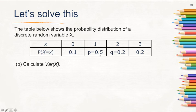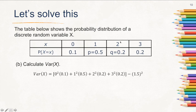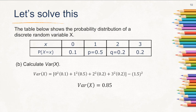Now calculate the variance of x. We already have E(x) = 1.5, so [E(x)]² = 1.5² = 2.25. Next, E(x²) = 0²×0.1 + 1²×0.5 + 2²×0.2 + 3²×0.2. This gives variance of x equal to 0.85. If you want the standard deviation, take the square root of 0.85.